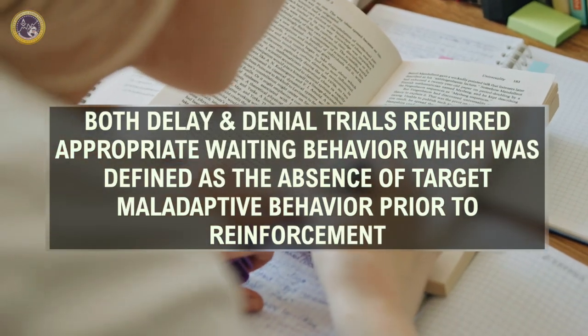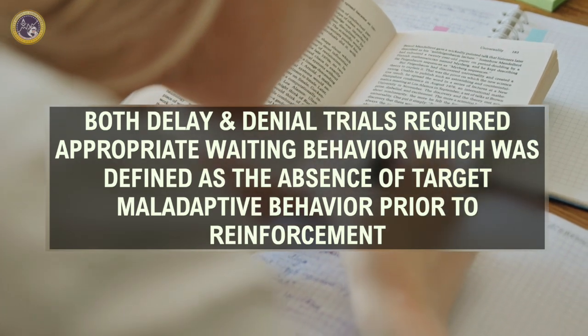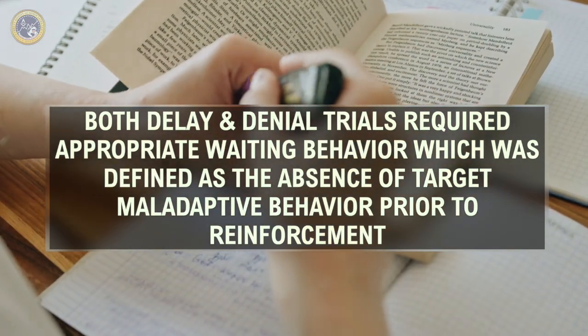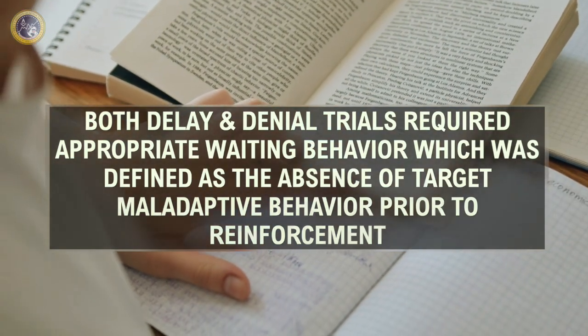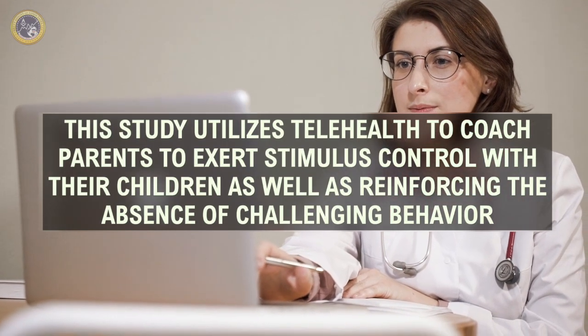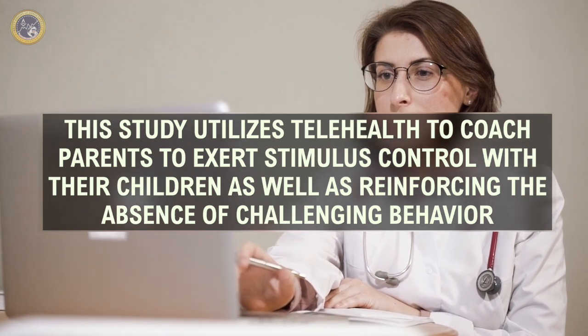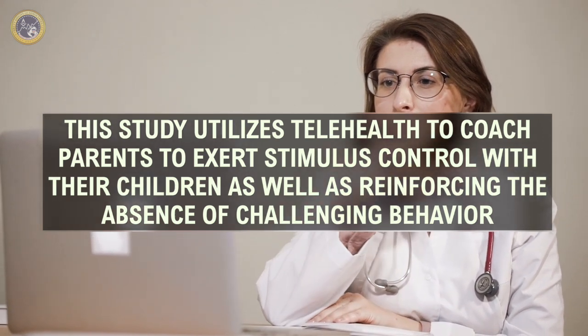Denial trials involved offering a lower preferred activity following a denial statement, such as, 'It's not available right now, but you can play with this instead.' Both delay and denial trials required appropriate waiting behavior, defined as the absence of target maladaptive behavior prior to reinforcement access in delay trials, or verbal praise for denial trials. The final phase of treatment involved interspersing denial trials with wait trials to further generalize the skill of tolerance to delayed reinforcement within the natural environment. This study extends on Hanley's original delay and denial treatment programs by utilizing telehealth to coach parents to exert stimulus control with their children, as well as reinforcing the absence of challenging behavior in order to gain access to delayed reinforcement.